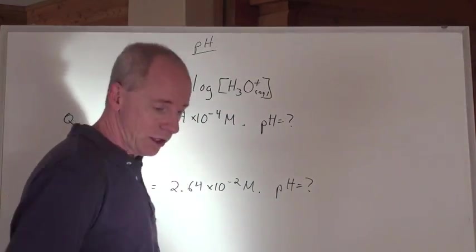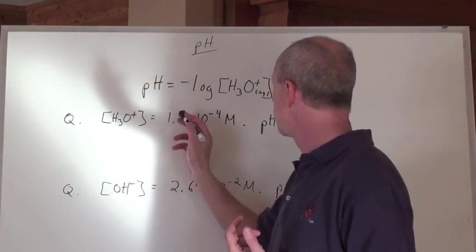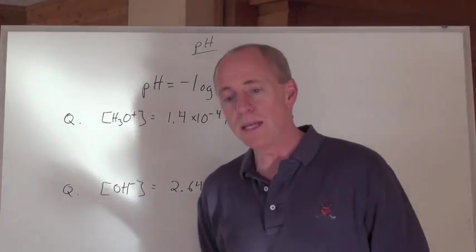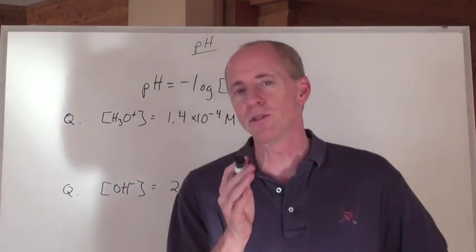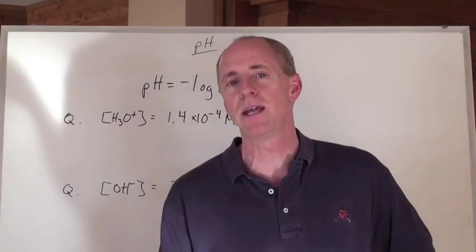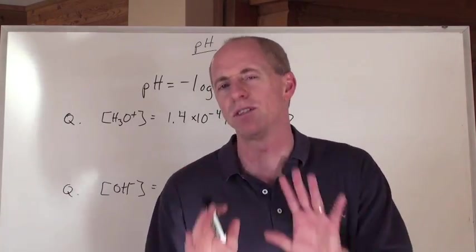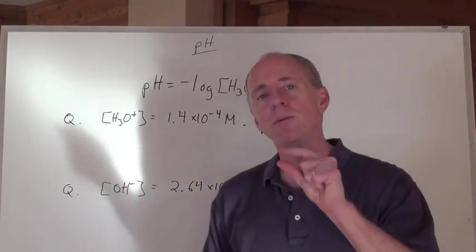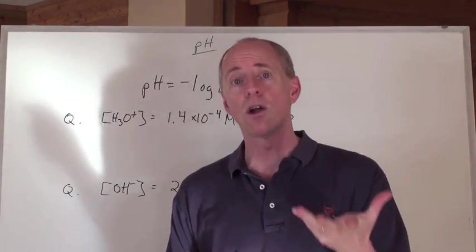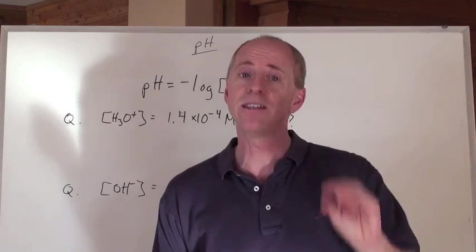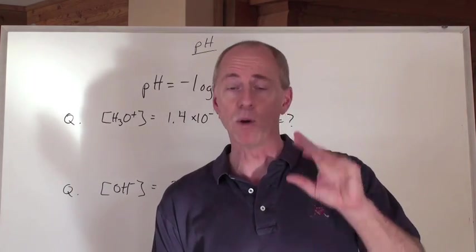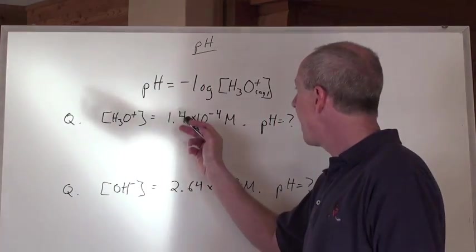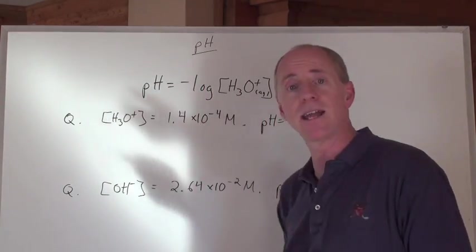So if the hydronium ion concentration in the solution is 1.4 times 10 to the negative 4 moles per liter, what's the pH? Here's what you know: the concentration of hydronium and hydroxide in pure water are both 10 to the negative 7. But now the solution is altered and the hydronium concentration is 10 to the negative 4.